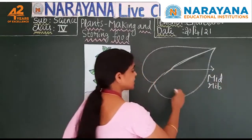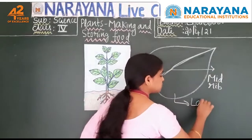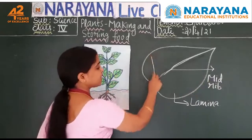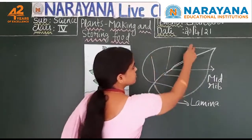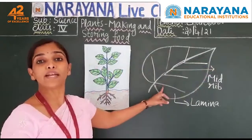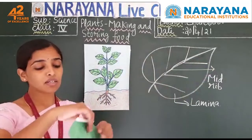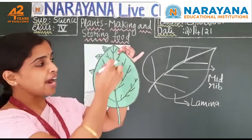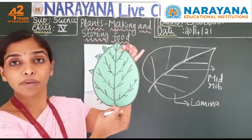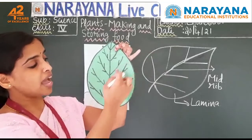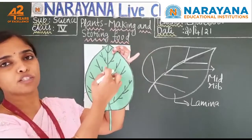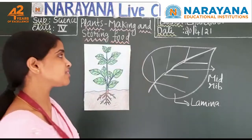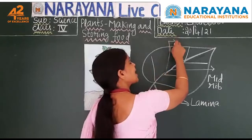The thick line at the center of the leaf is called the midrib. And this flat portion of the leaf is called the lamina. There are thin lines coming from the midrib on both sides — they are thinner compared to the midrib. These are called side veins.